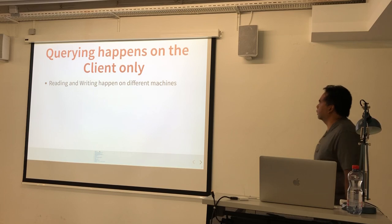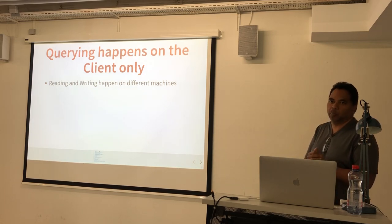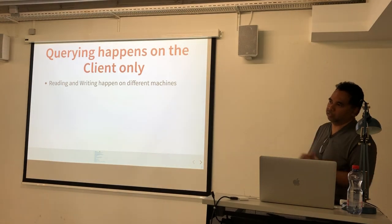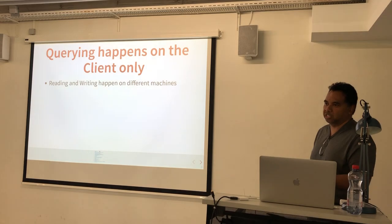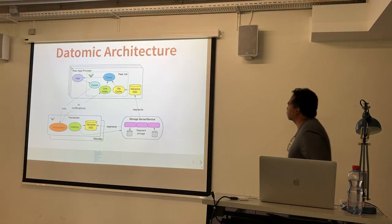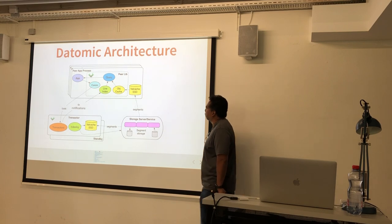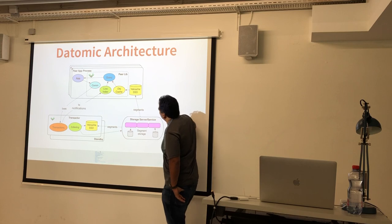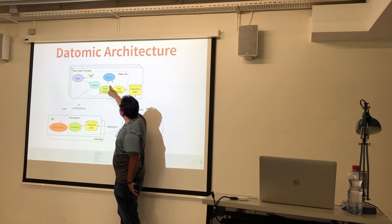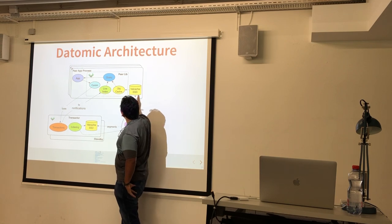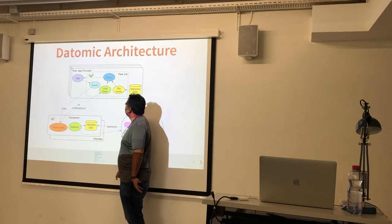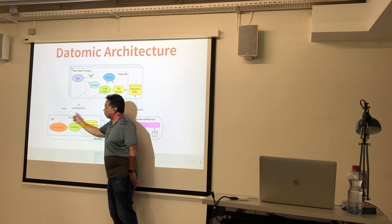Another surprising fact about Datomic is that all the querying and reading is done on the client. That's completely different from what you're used to with PostgreSQL, where you always have a server and you get data from it. In Datomic, the database is in your client's machine — it's in the process of your application. In the typical Datomic architecture, at the top you have the client part and at the bottom the server part. The data and query module reside inside the application process, and everything else is just sending the data you want to write to the server.